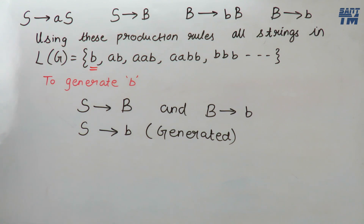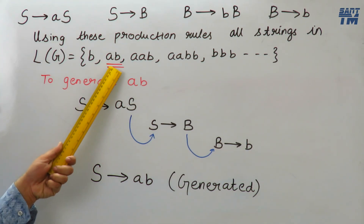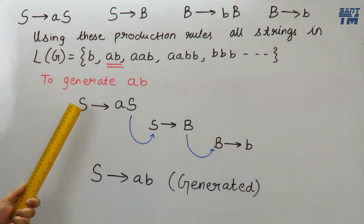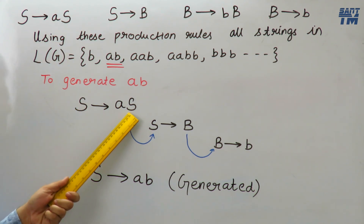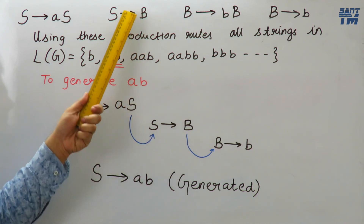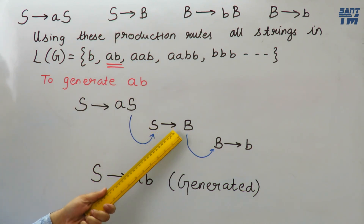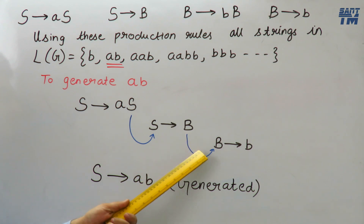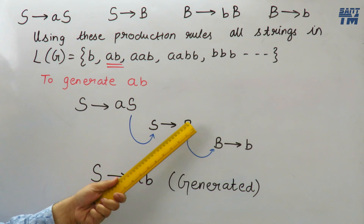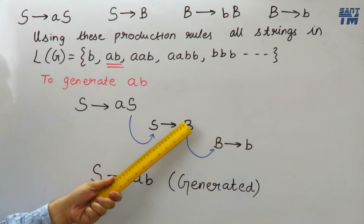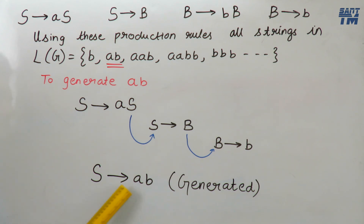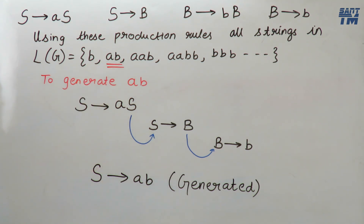Now we will see how ab will be generated. To generate ab, we take the production S derives aS. Then this S derives aS, and this S can be replaced using S derives B. Then B can be replaced using B derives b. So we get S derives ab — the second string is also generated.